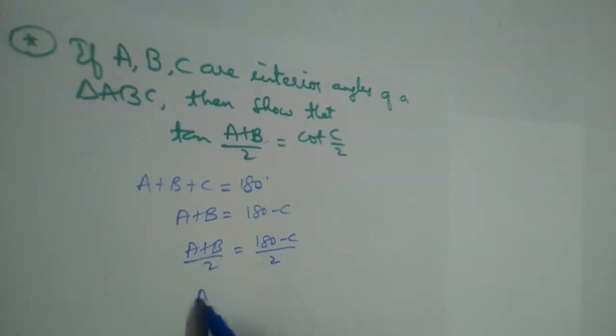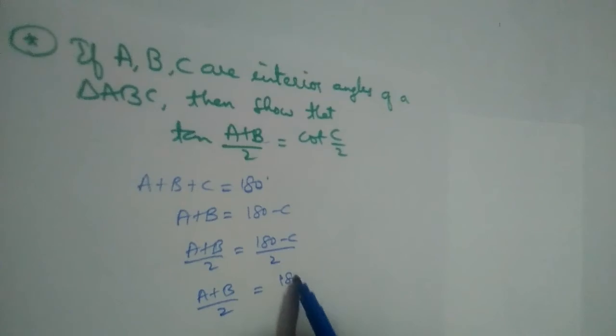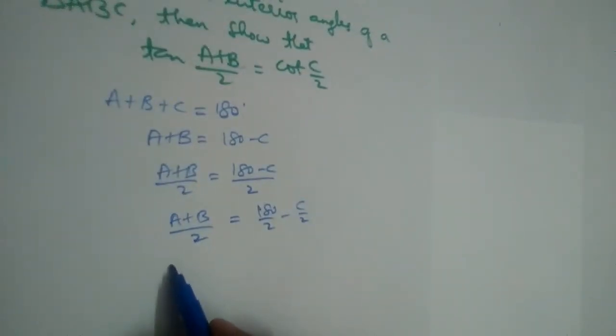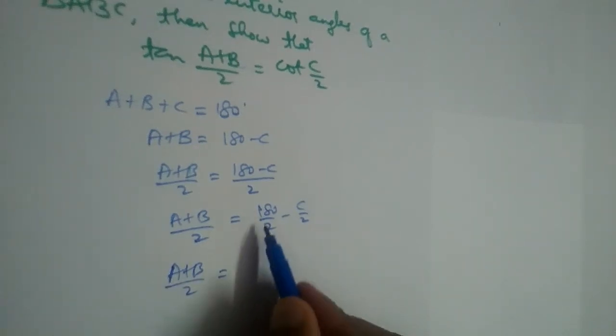So this will be (A+B)/2 is equal to 180/2 minus C/2. This will become (A+B)/2 is equal to 180 divided by 2 is 90 minus C/2.